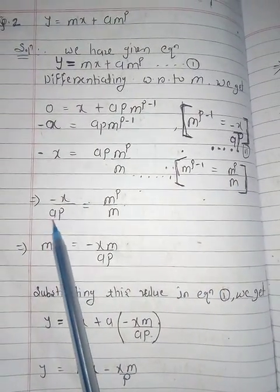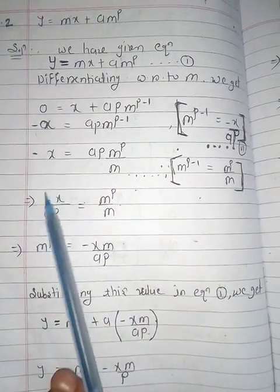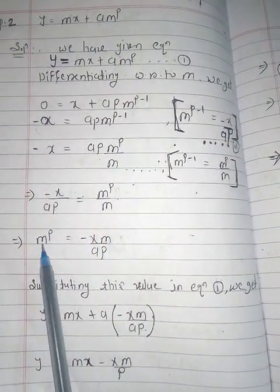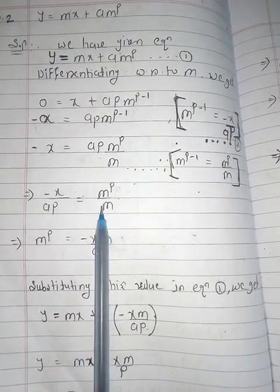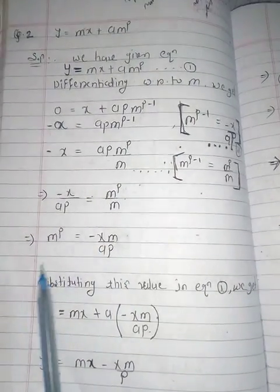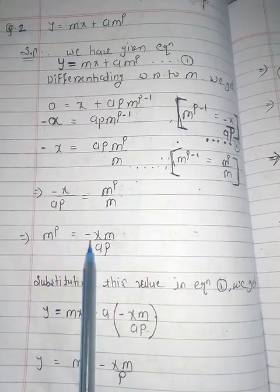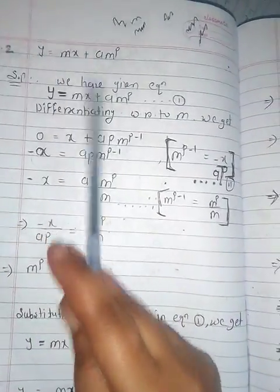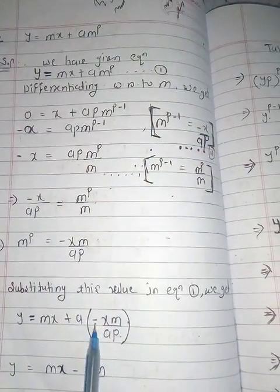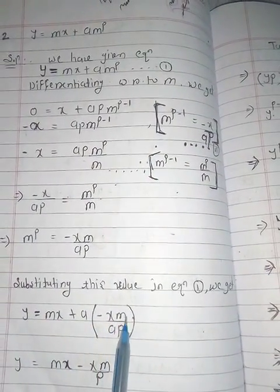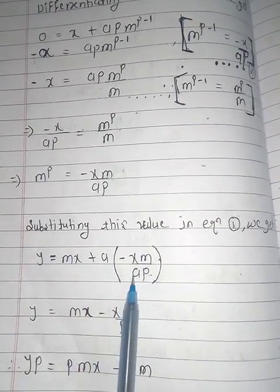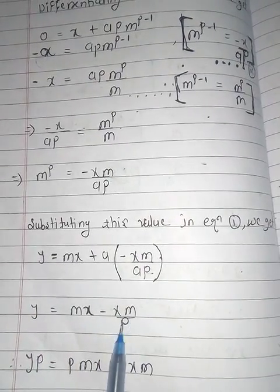From this, minus x upon ap equals m^p upon m, so m^p equals minus x·m upon ap. Now we substitute this value of m^p into equation number one: y = mx + a·m^p. Replacing m^p with minus x·m upon ap, the a cancels, giving y = mx minus x·m upon p.